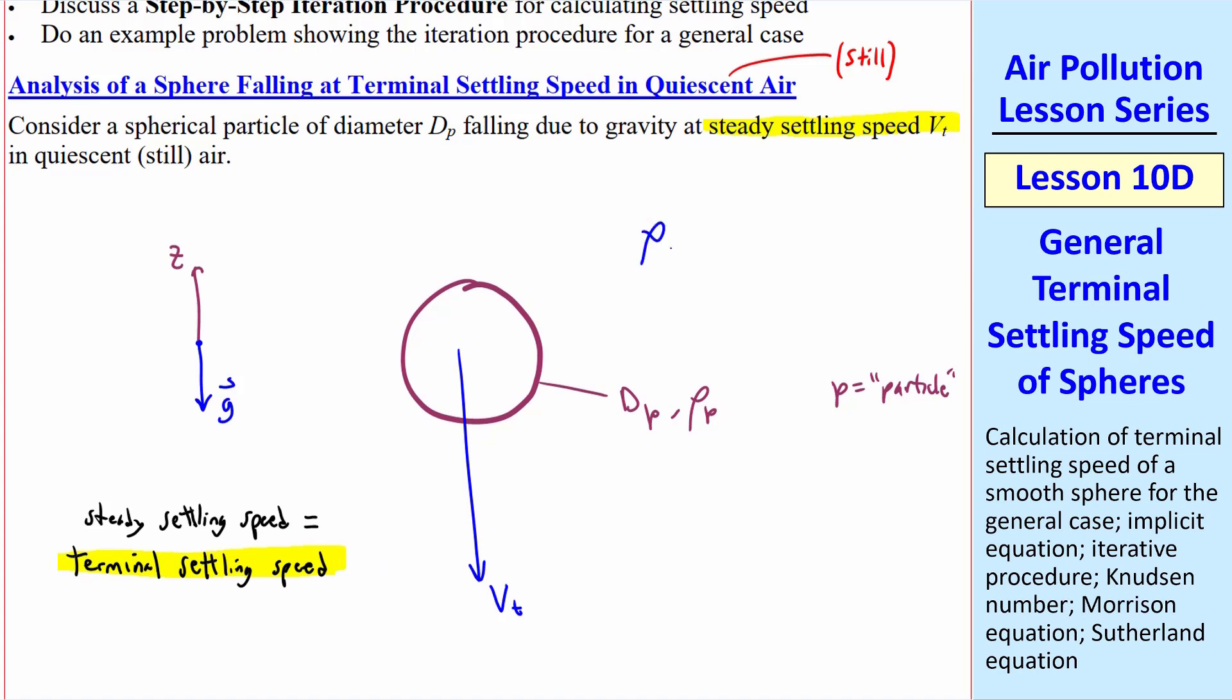The sphere is surrounded by air with density ρ and viscosity μ. And since there's no acceleration, ΣFz equals zero.